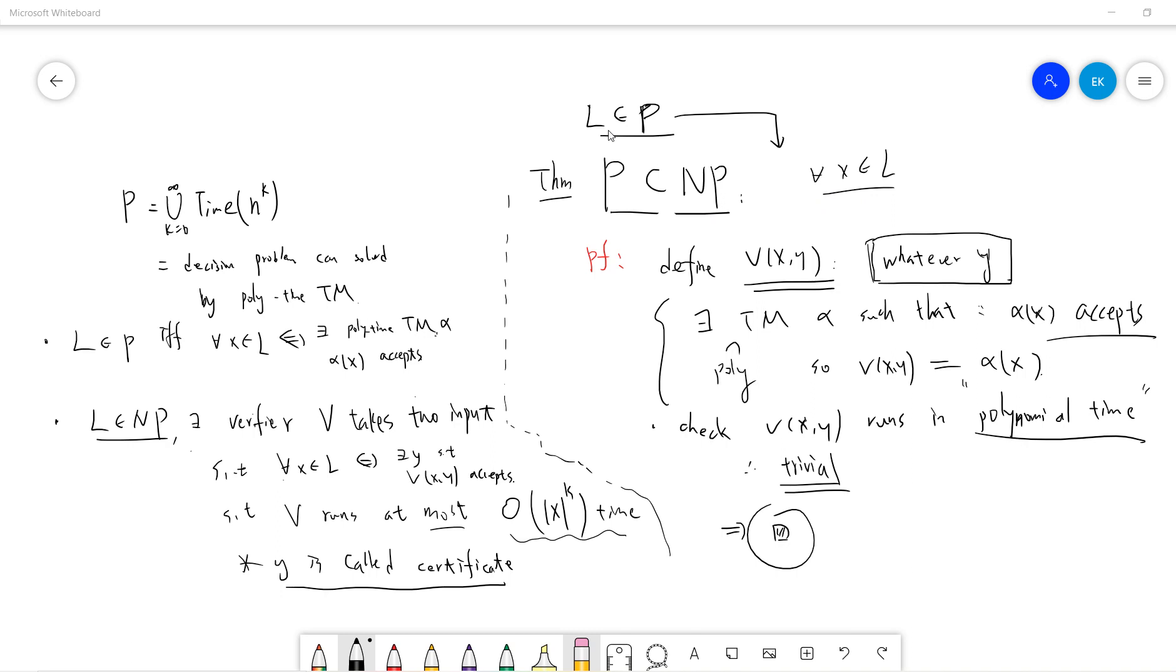So, you take a, you take a for l belongs to P, and for all x belongs to l, you need to prove the verifier, give a verifier, right? So, it's very easy. I just, I just, whoever you certificate give me,